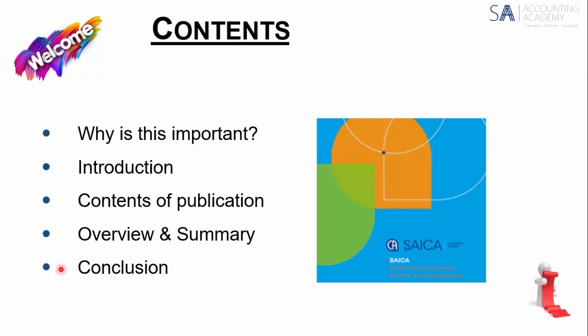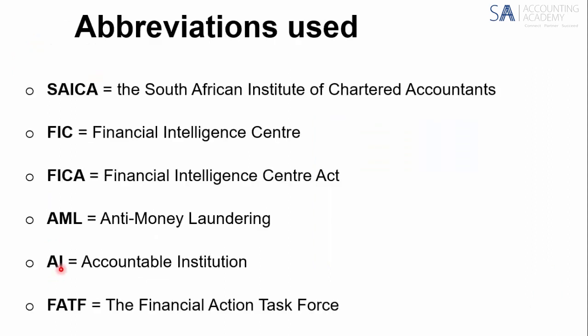The next 15 minutes or so we'll be going through a summary of this. These are the abbreviations used on your slides: CICA, FIC — the Financial Intelligence Centre — FICA is the Act, AML is Anti-Money Laundering, AI stands for Accountable Institution — not the artificial intelligence we refer to lately — AI meaning Accountable Institution in terms of FIC, and FATF, the Financial Action Task Force.